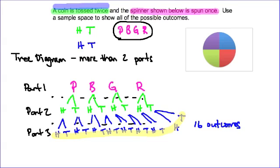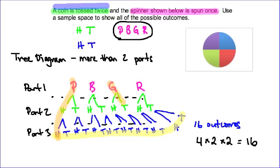You could calculate this as a shortcut: 4 outcomes in the first part, 2 outcomes for the second part, and 2 outcomes for the third part — 4 times 2 times 2 equals 16. But a sample space also lists all of the outcomes. To read the sample space you read along the branches. For instance, purple-heads-heads is one possible outcome, and green-tails-tails is another possible outcome.